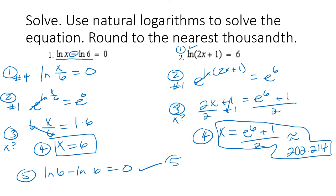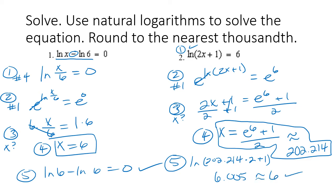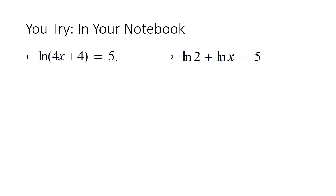Step five: checking. I'll use the approximate value to show you it still works. Natural log of two times 201.214 plus one — typing this in, we get approximately 6.0005, which is essentially six. So yes, we did it correctly!